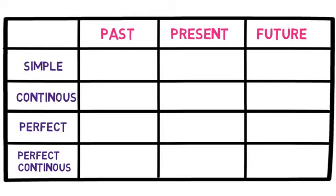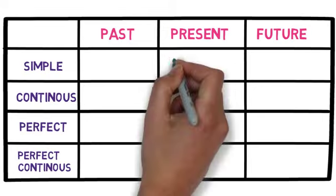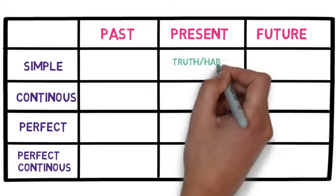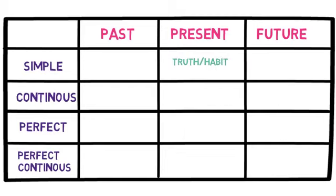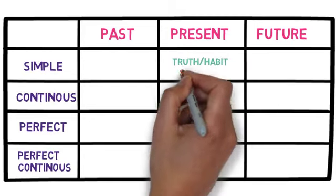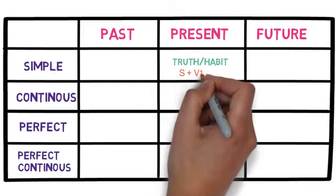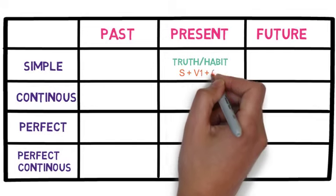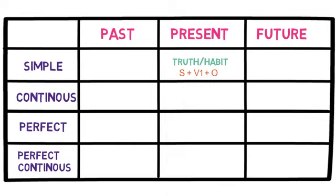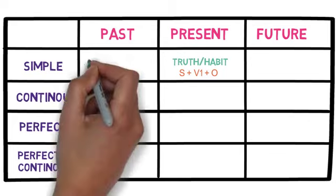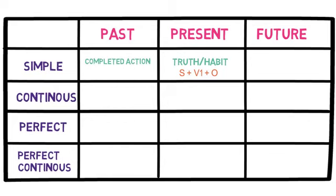Let's start with simple present tense. It denotes a truth or a regular habit. The tense structure is subject plus verb's first form plus object. Simple past tense refers to a completed action.